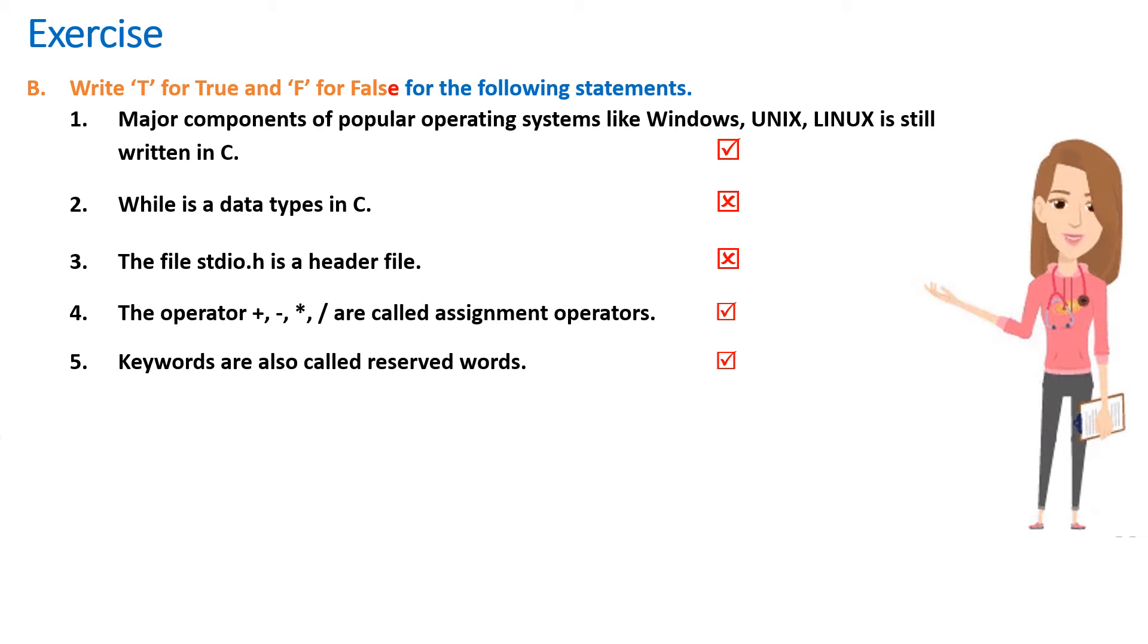Write T for true and F for false for the following statements. 1. Major components of popular operating systems like Windows, Unix, Linux is still written in C - true. 2. While is a data types in C - false.